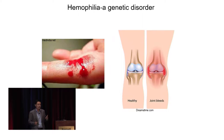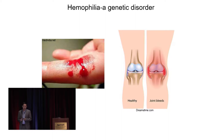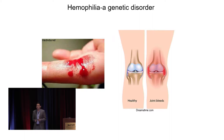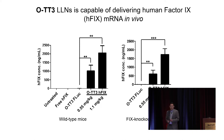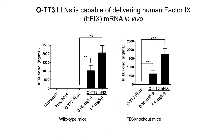The first disease model we selected is hemophilia, a genetic disorder caused by missing or mutated factor VIII or factor IX. Patients suffer from life-threatening bleeding or serious complications such as joint bleeds. In this study, we formulated TT3 with mRNA encoding human factor IX, then injected it intravenously into wild-type mice and factor IX knockout mice. The y-axis is factor IX concentration in serum; both mouse groups showed dose-dependent recovery of factor IX concentration.